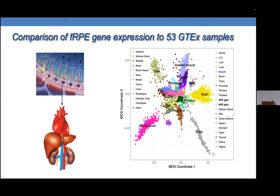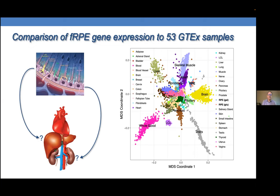Thank you for the interesting talk. A quick question about the first part of your presentation: you showed very nicely that Tyro3 is a modifier for MERTK-associated retinal degeneration. Did you ever explore whether Tyro3 is also a modifier in other RPE models, or is it really only specific and limited to MERTK?